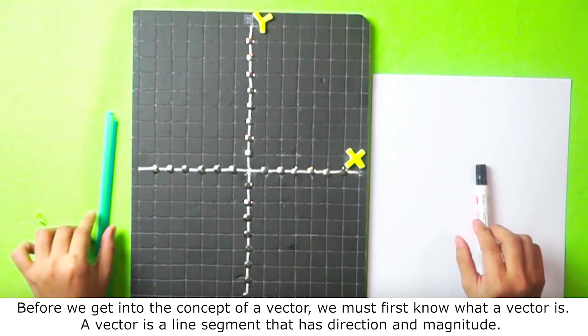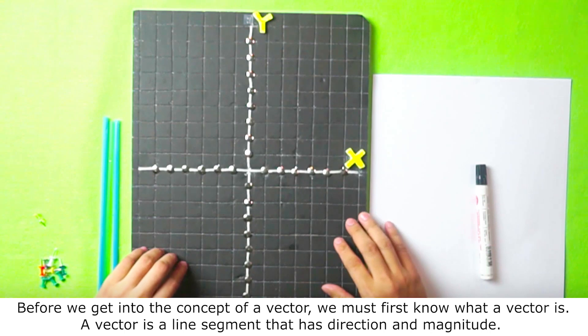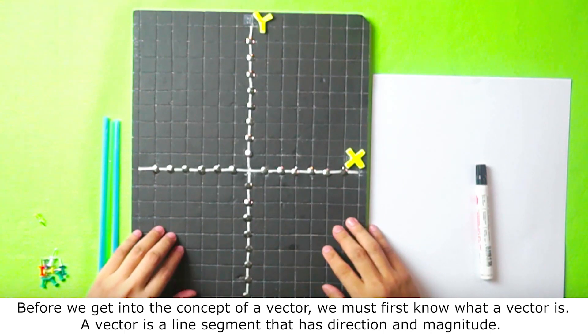Before we get into the concept of vector, we must first know what a vector is. A vector is a line segment that has direction and magnitude.